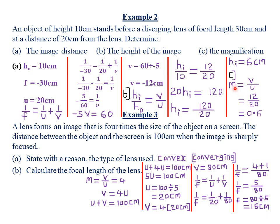Our third example: a lens forms an image that is four times the size of the object on the screen, and the distance between the object and the screen is 100 centimeters when the image is sharply focused. First, state with reason the type of lens used. Because the image was formed on the screen, it is a real image. It is only for convex lenses that real images are formed, so the lens used must be a convex or converging lens.